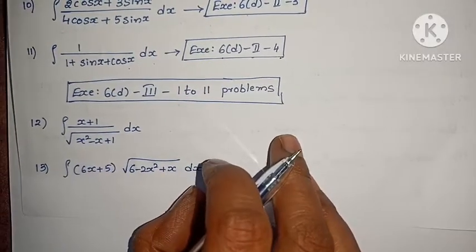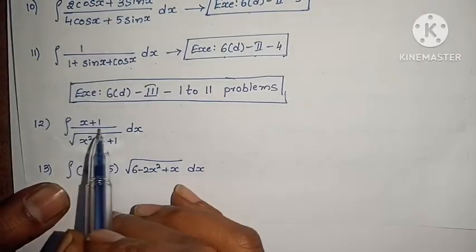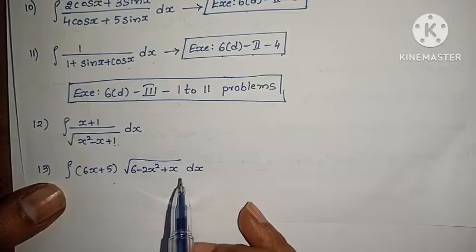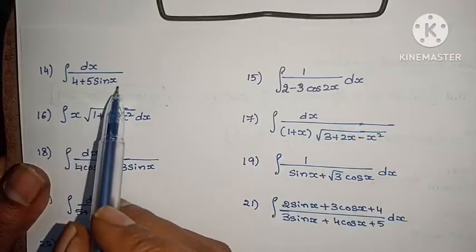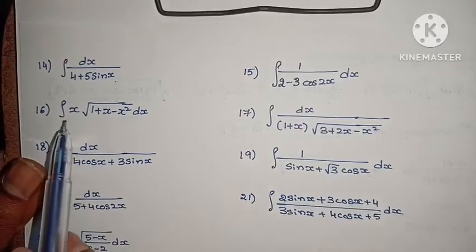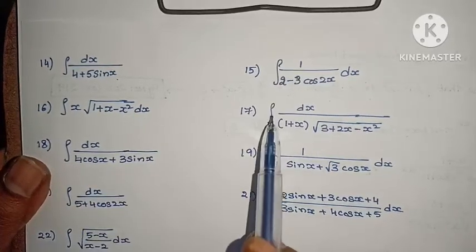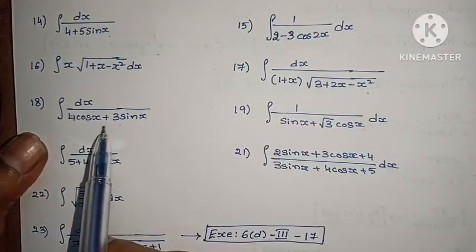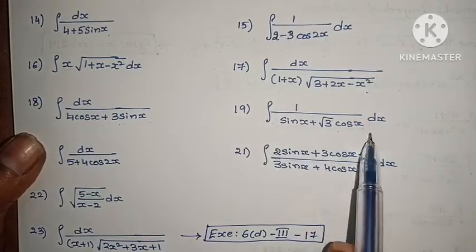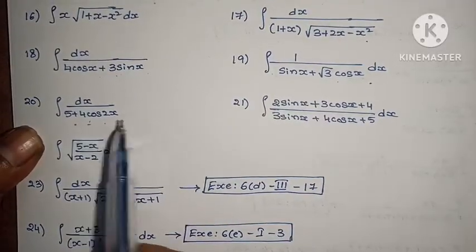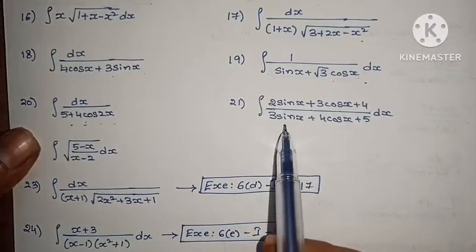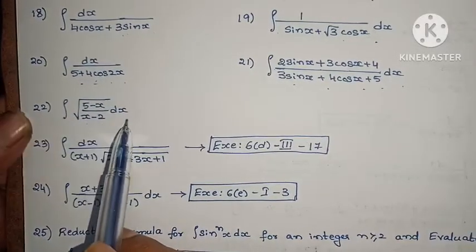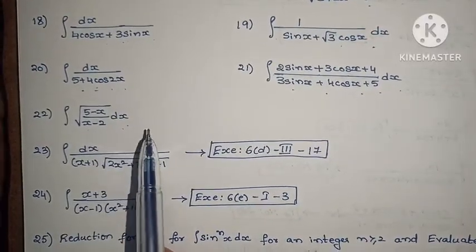Important problems from previous question papers: integral of (x+1)/√(x² − x + 1) dx; integral of (6x+5)·√(6 − 2x² + x) dx; integral of dx/(4 + 5 sin x); integral of 1/(2 − 3 cos 2x) dx; integral of x·√(1 + x − x²) dx; integral of dx/(1 + x·√(3 + 2x − x²)); integral of dx/(4 + 4 cos x + 3 sin x); integral of 1/(sin x + √3 cos x) dx; integral of dx/(5 + 4 cos 2x); integral of (2 sin x + 3 cos x + 4)/(3 sin x + 4 cos x + 5) dx; integral of √((5−x)/(x−2)) dx — exercise 6d, Roman numeral 3, 11th problem.